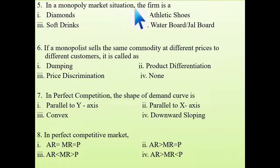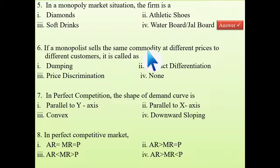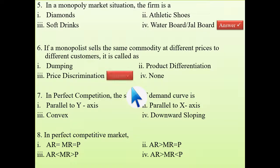Fifth question: in a monopoly market situation, which is the firm among diamond, soft drink, athletic shoes, water board, or jaw board? The answer is water board, because it is the sole entity that can provide and regulate water circulation. Sixth question: if a monopolist sells the same commodity at different prices to different customers, that is price discrimination, which is the unique feature of a monopoly market.